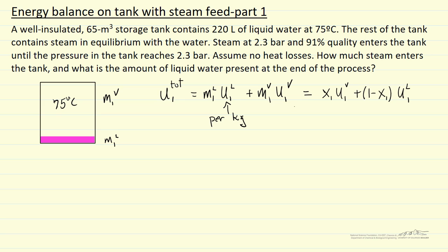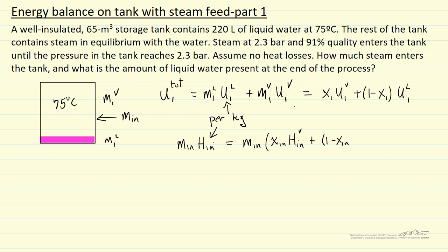Now we're going to add steam, so we'll have energy flow in. The total amount flowing in involves a mass called m_in — this is steam at 2.3 bar, higher temperature. We add energy equal to the mass in times the enthalpy in, which is per kilogram. We write enthalpy in terms of the incoming quality: quality_in times enthalpy of vapor plus one minus quality_in times enthalpy of liquid coming in. We use enthalpy here because this is a flow system.